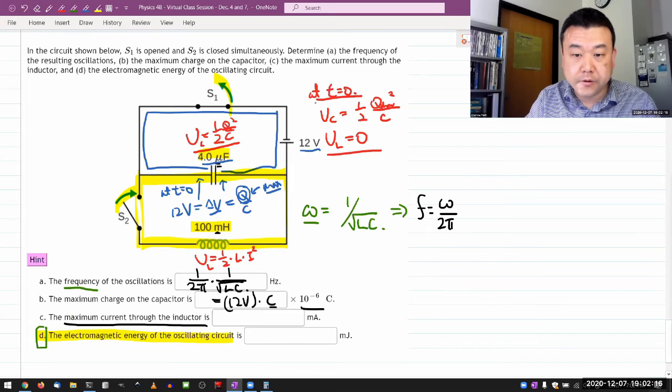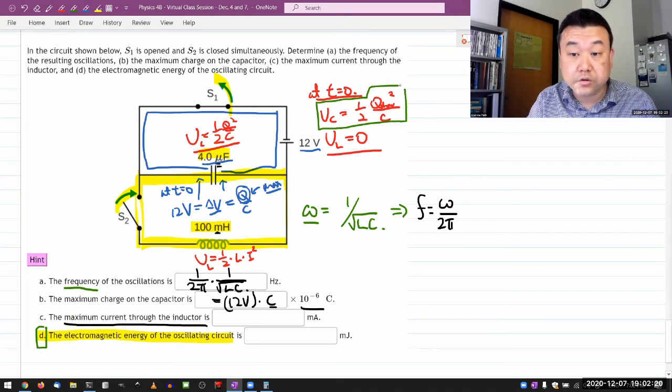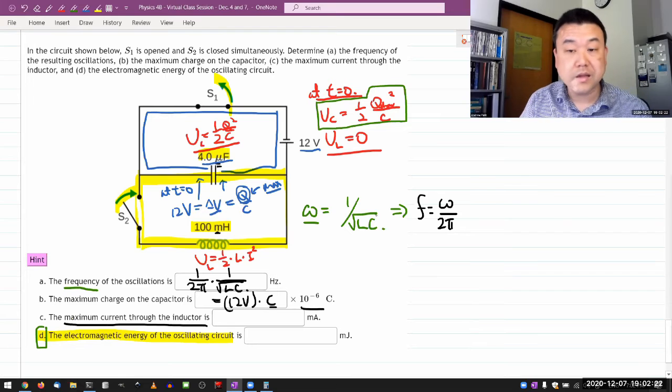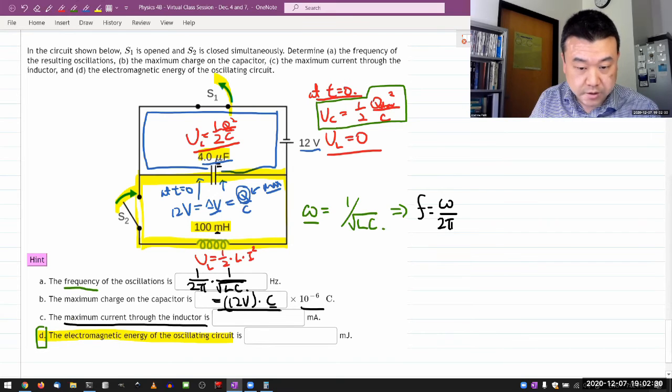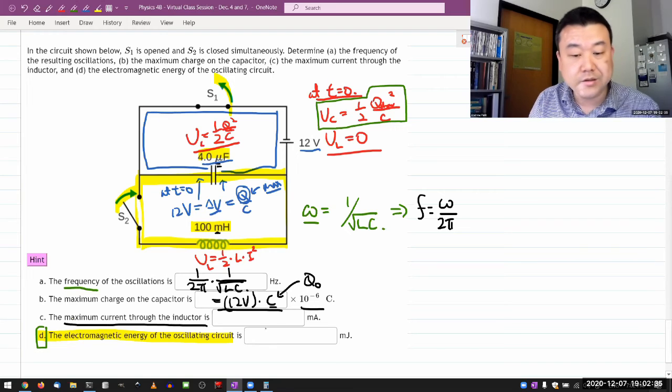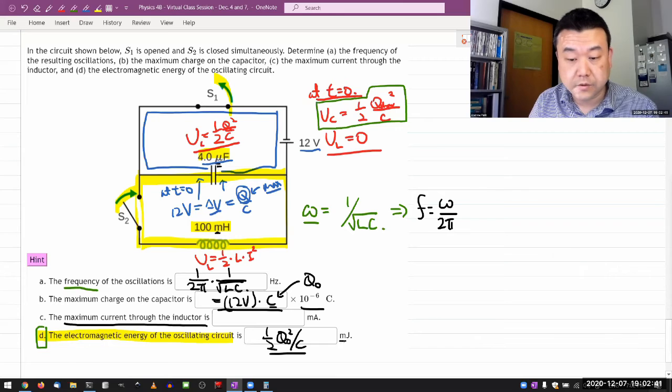So let me first answer the question part d. Part d comes simply from this expression here. That's how much energy was in the circuit to start with. And that's going to be the conserved energy. So you just put in. So you already worked out maximum charge here. Let me give that a label q naught. So the electromagnetic energy in the oscillating circuit is one half q naught squared over C. What's the power of 10? That should be it.